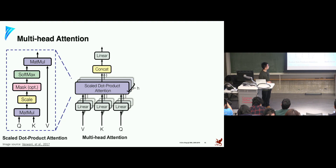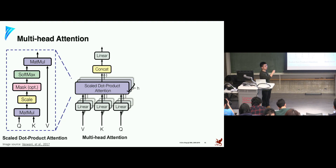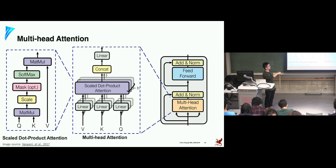This multi-head attention is the core component in the transformer. We add residual connections and layer normalization, followed by a feed-forward computation and another residual connection. Using these building blocks, we compose an encoder and decoder for machine translation. The encoder stacks tens of these attention building blocks. The encoder uses self-attention, where query, key, and values are all set to the encoder's hidden state — essentially attending to itself.